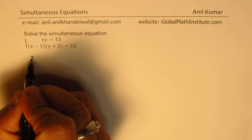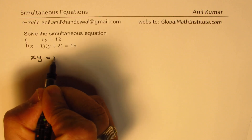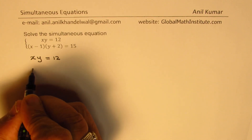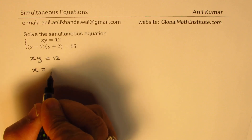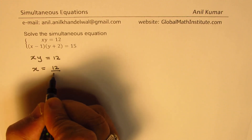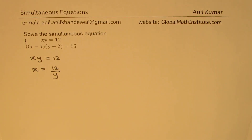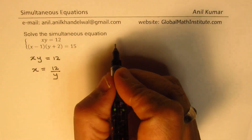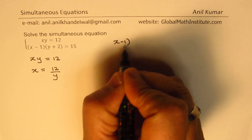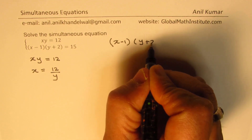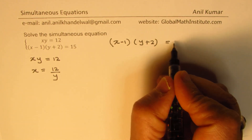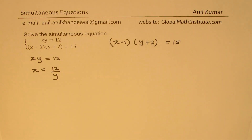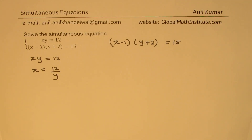We are given one equation, which is xy equals to 12. From this equation, we can always write x is equal to 12 over y. The second equation given to us is x minus 1 times y plus 2 is equal to 15. One way is to substitute the value of x, then we have everything in y and we can solve it.